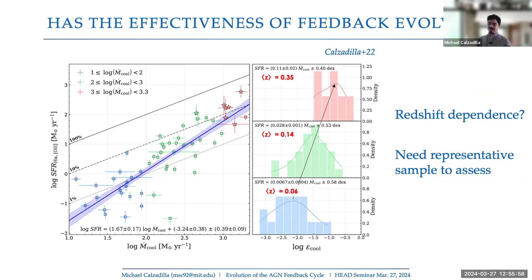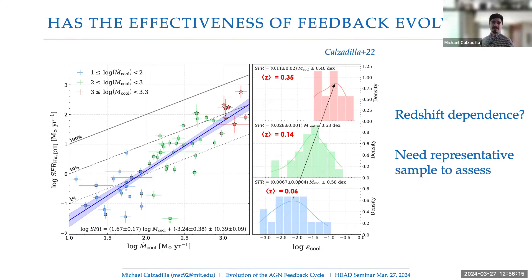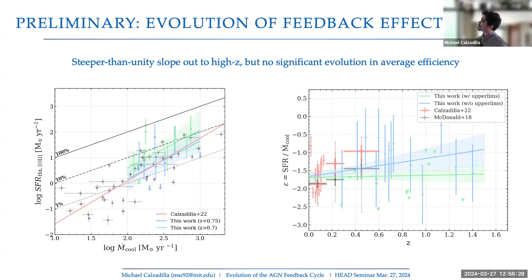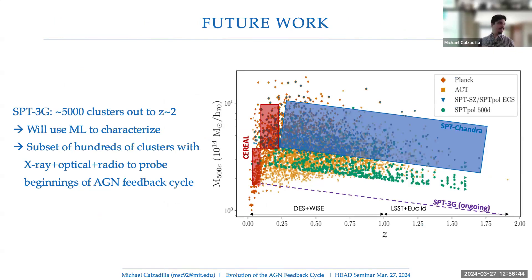Preliminary results from the SPT sample show that even at higher redshifts, the steep sub-unity relation between cooling rate and star formation rate persists, with no significant evolution in the average efficiency of feedback. In the future, I plan to study this with the upcoming SPT-3G survey, which has thousands of clusters, and to apply machine learning to characterize these systems. I'll be coming to the CfA in the fall and am excited to pursue this work.